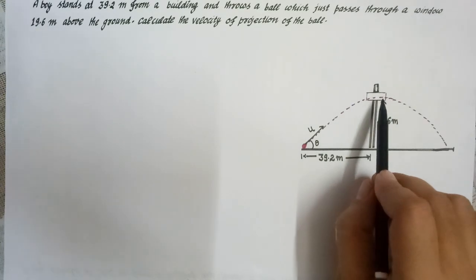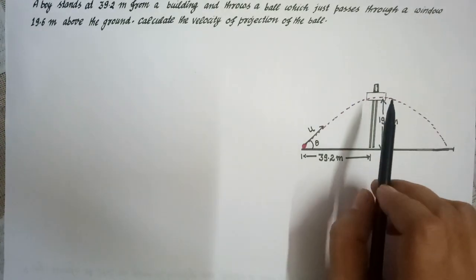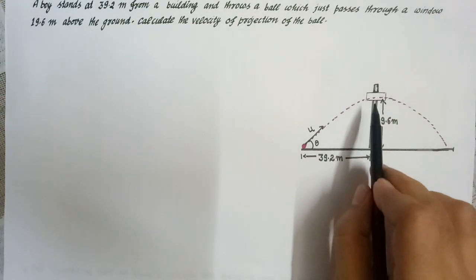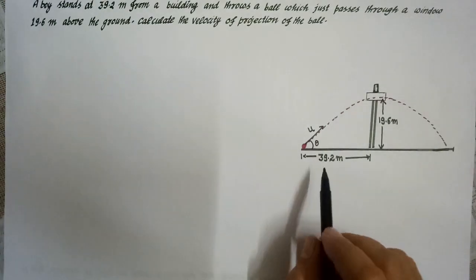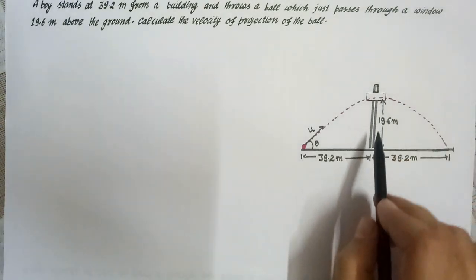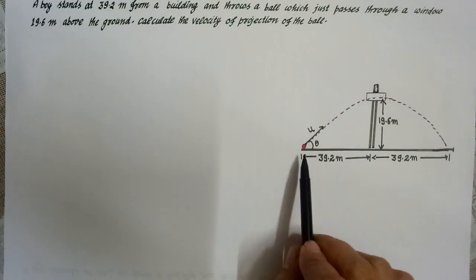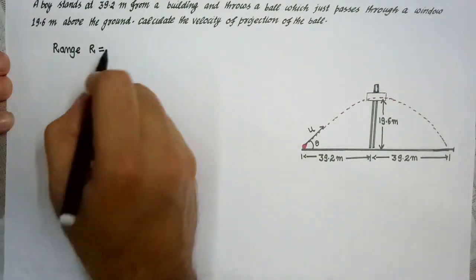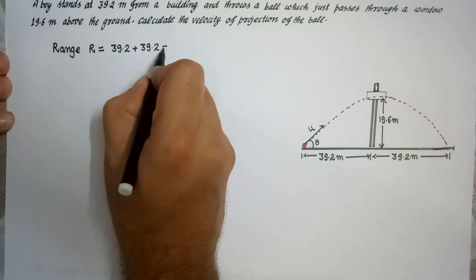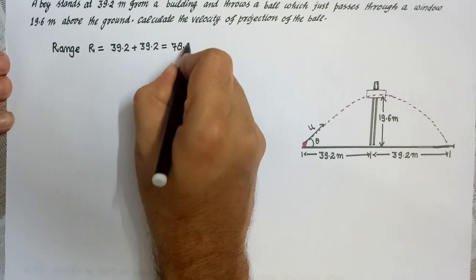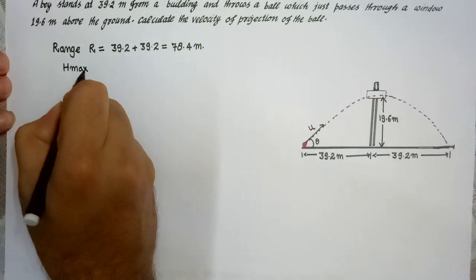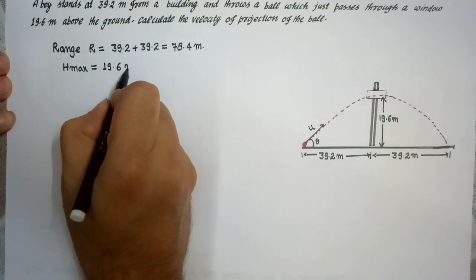यह ball just इस window को pass कर रही है, तो the maximum height attained by the ball is 19.6 meter। Maximum height attain करने के बाद ball दूसरी तरफ भी 39.2 meter की दूरी पर जाके ground से टकराएगी। Maximum height पर range आधी होगी यानी R/2। तो total range R = 39.2 + 39.2 = 78.4 meter, और maximum height = 19.6 meter।